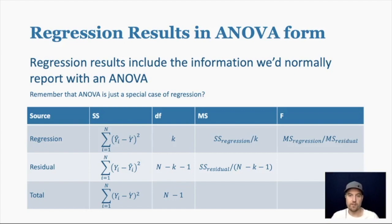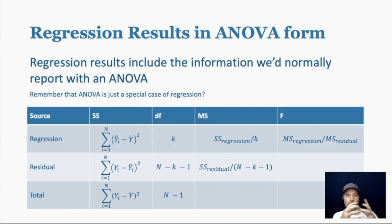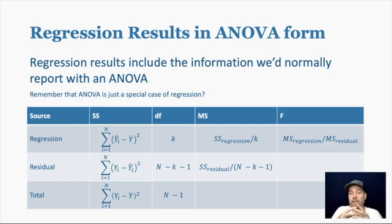When we're getting regression results, one way we can get them is in ANOVA form. ANOVA is just a special case of regression — it is regression with a categorical predictor. What we're basically doing is breaking up parts of the variability in the outcome and deciding if we can explain that variability or not with the information we have from the predictors.